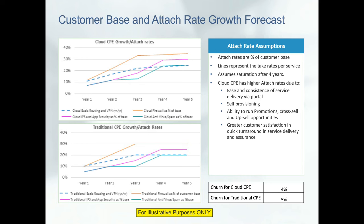The attach rate is the percentage of the base that is subscribing to each new service, like firewall, IPS, or antivirus. The orange line shows the firewall attach rate, the pink line for IPS, and the green line for antivirus. We believe Cloud CPE has marginally higher attach rate value over five years because there will be the ability to run promotions — trial and then subscribe promotions — and the ability to cross-sell and up-sell based on customer needs. There will also be higher customer satisfaction. All these factors will lead to higher attach rates.